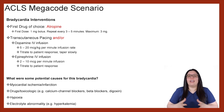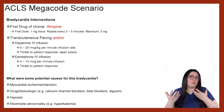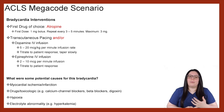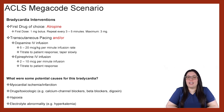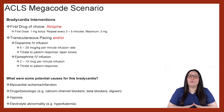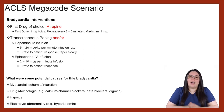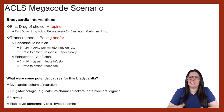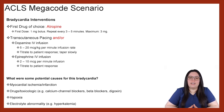We can also consider transcutaneous pacing and/or dopamine or epinephrine infusions. If we're going to provide a dopamine IV infusion based on the new 2020 guidelines, we're going to start at five to 20 micrograms per kilogram per minute as an infusion rate, and then titrate based on the patient's response, as well as taper this medication down slowly. When it comes to our epinephrine IV infusion, that will be between two to 10 micrograms per minute, again titrating based on the patient's response.